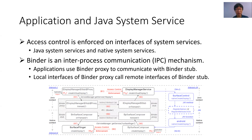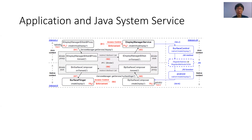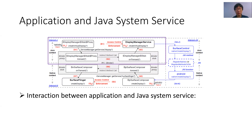In the following, I will use this example to introduce how Android applications interact with Java and native system services, as well as how Java system services interact with native system services. To interact with Java system services, such as display manager service in this example, applications use a Java binder proxy to send a request to the Java binder stub, and this process has three steps.